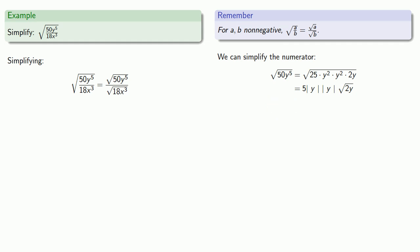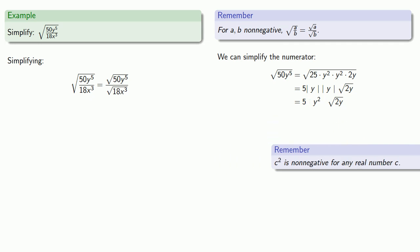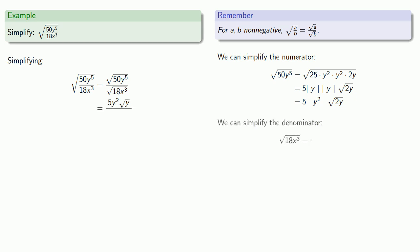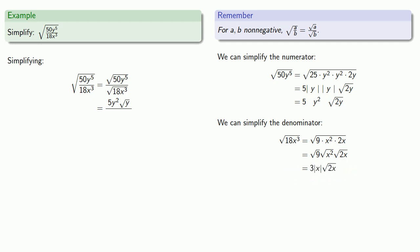The product |y|·|y| can be written as |y²|. And since c² is non-negative for any real number, we don't actually need the absolute value in this case. Meanwhile, we simplify the denominator by factoring 18x³ by perfect squares: it breaks up as √9 · √(x²) · √(2x), which we then simplify to get our denominator.